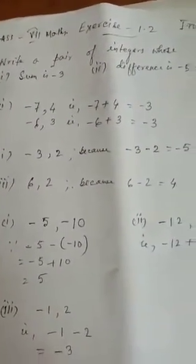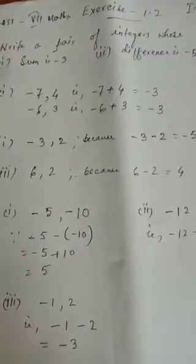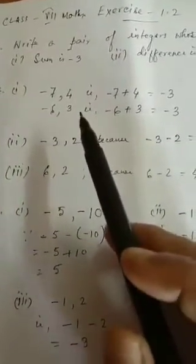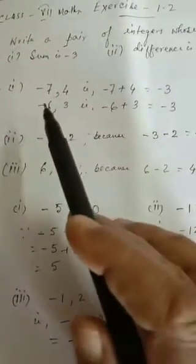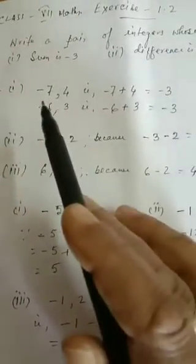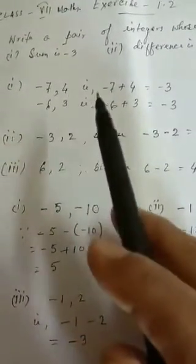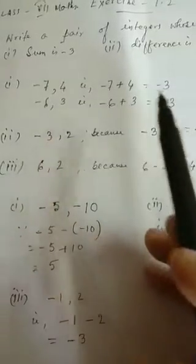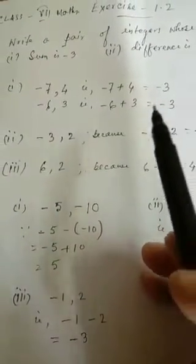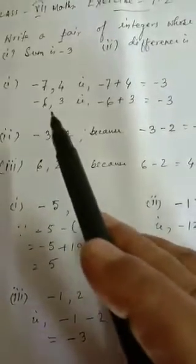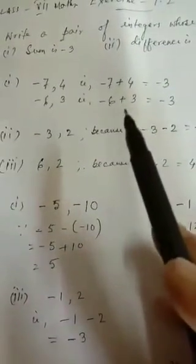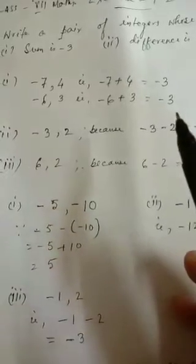Now let us go to the sums of Exercise 1.2. The first question: write a pair of integers whose sum is minus 3. I took two pairs of integers. First one: minus 7 and 4. When you add minus 7 plus 4, you get minus 3. Similarly, you can take minus 6 and 3 — when you add minus 6 plus 3, you also get minus 3.